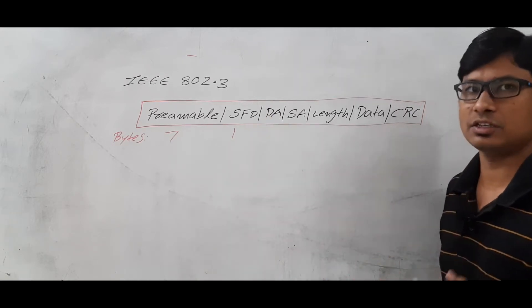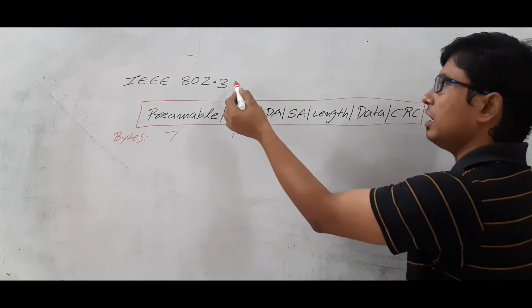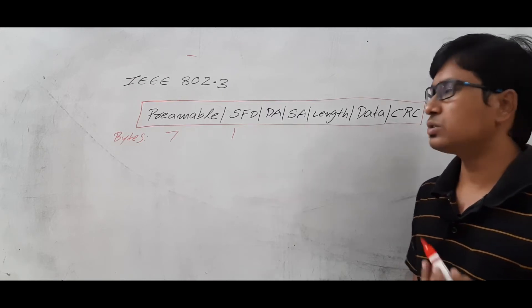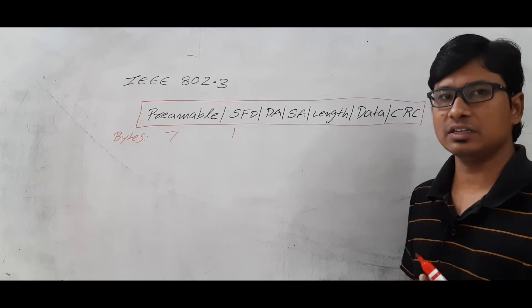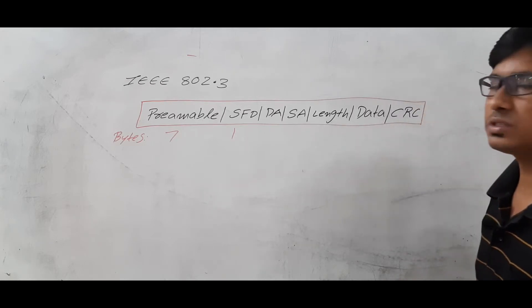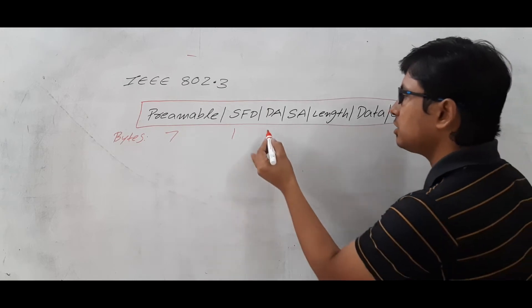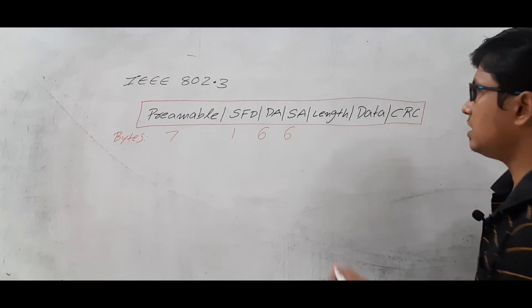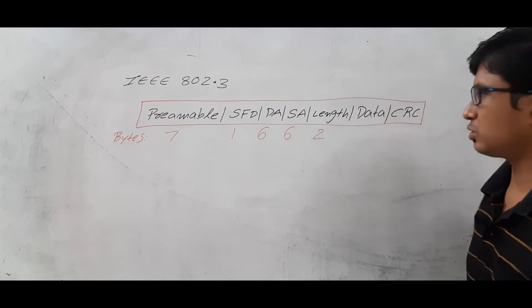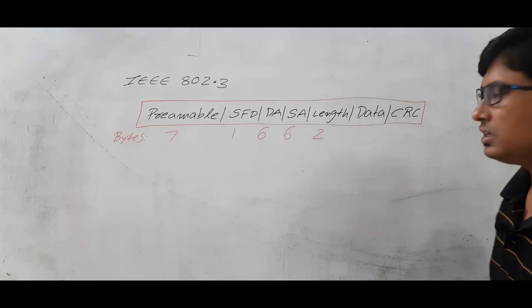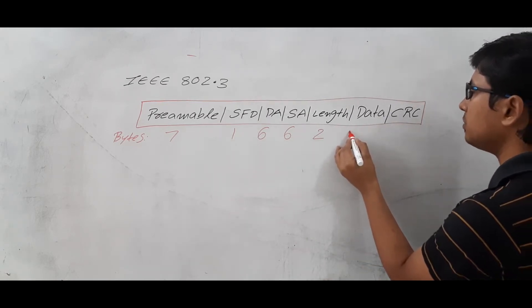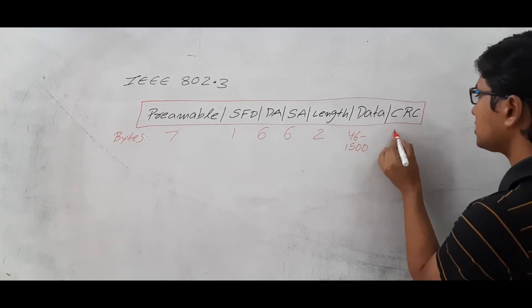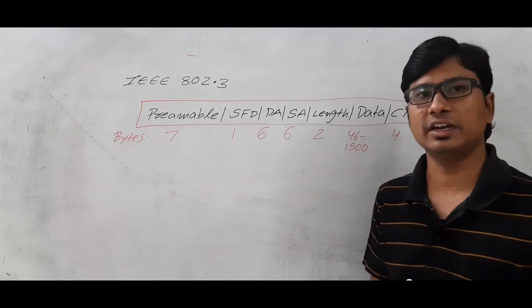This destination address is a MAC address. Why is it a MAC address? Because you are discussing about Ethernet, which works in the data link layer. In the data link layer we have the MAC address, also called the physical address, whose size is 48 bits. So 48 bits means it will occupy six bytes. The source MAC address is also six bytes. The length of the packet is two bytes. Data is minimum 46 bytes to 1500 bytes. And the CRC is a four-byte cyclic redundancy check.